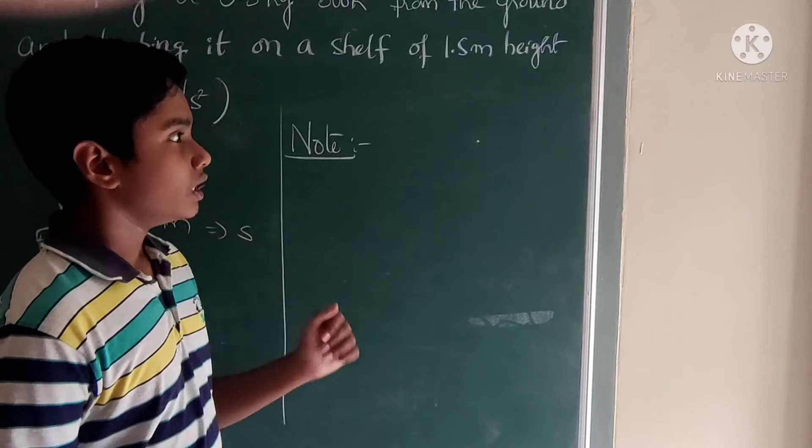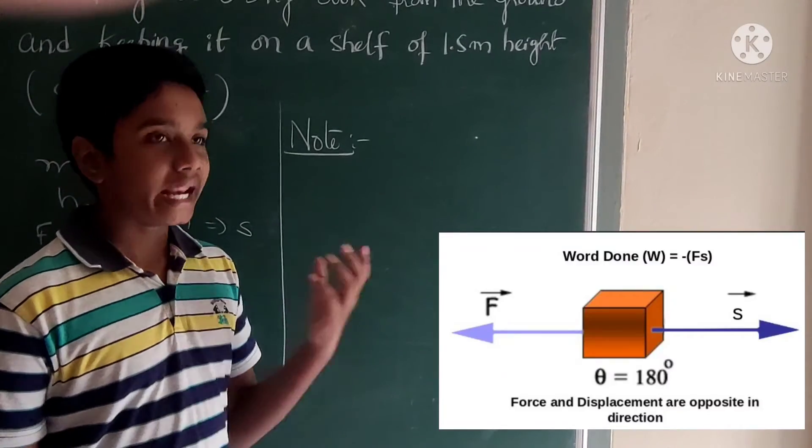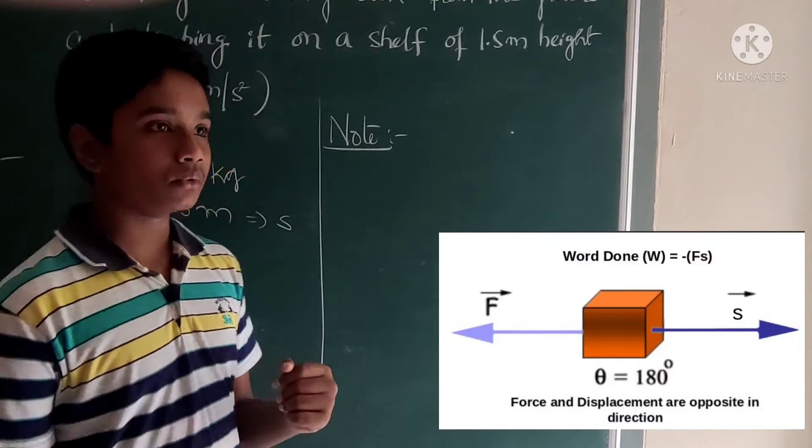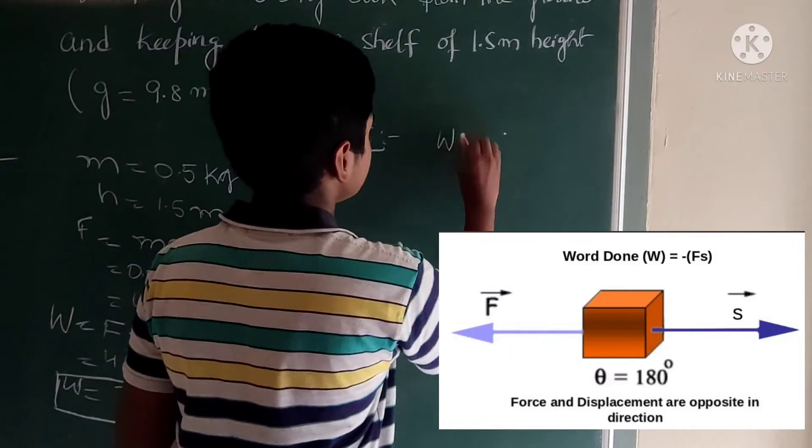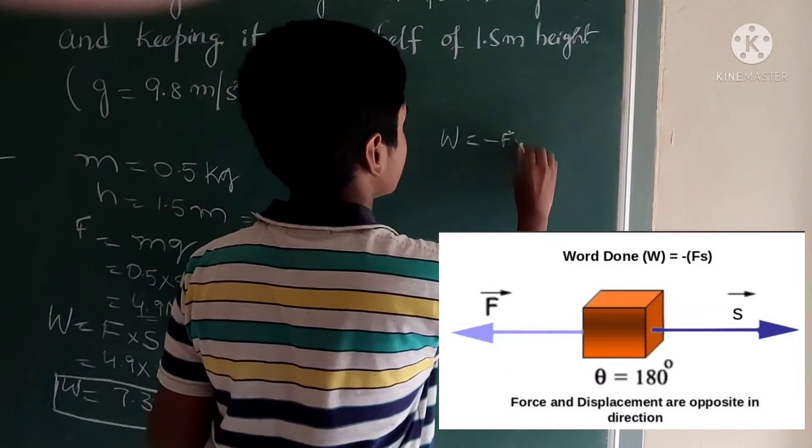Important point, note: If the force and displacement are acting in opposite directions, the work done will be negative. Therefore, W is equal to minus FS. This is a very important point for us.